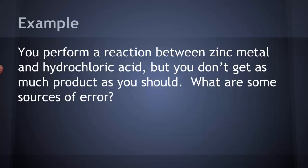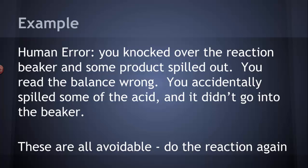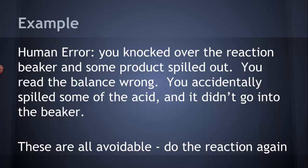Well, human error: you knocked over the reaction beaker and maybe some of the product spilled out, or you read the balance wrong, or you accidentally spilled some of the acid and it didn't go into the beaker. These are all mistakes. These aren't really errors in the experiment. These are things that you did wrong, accidents or mistakes. You want to fix those? Do the reaction again and don't make those mistakes. We don't count those as errors.